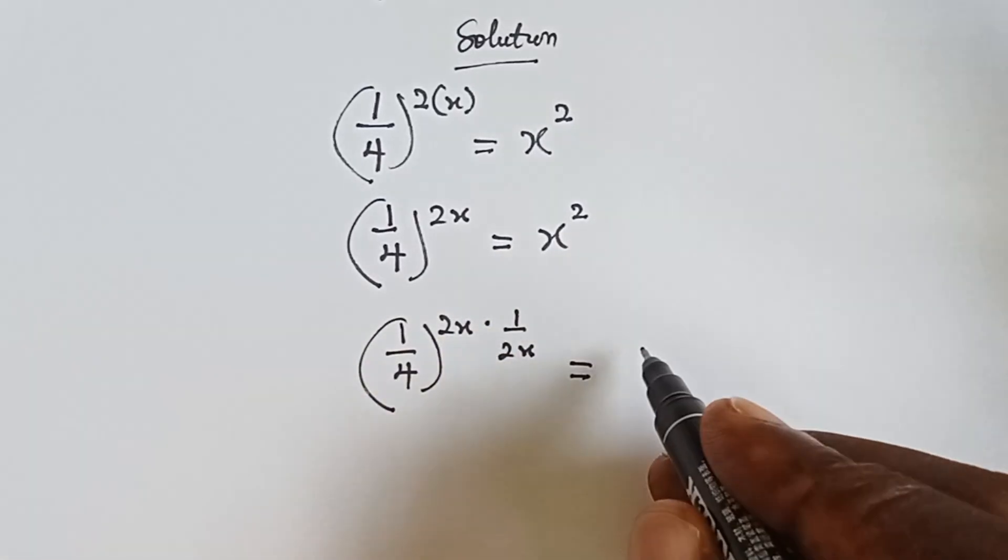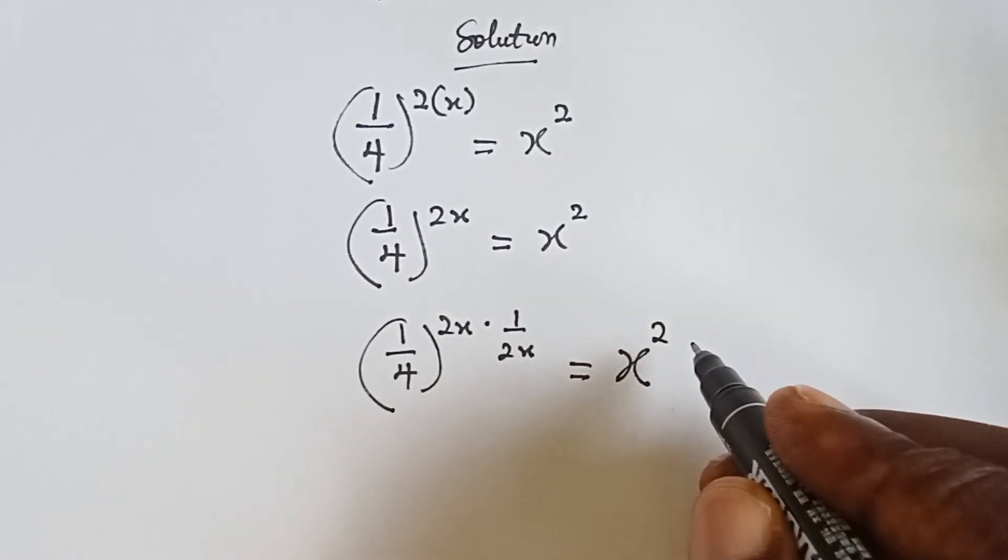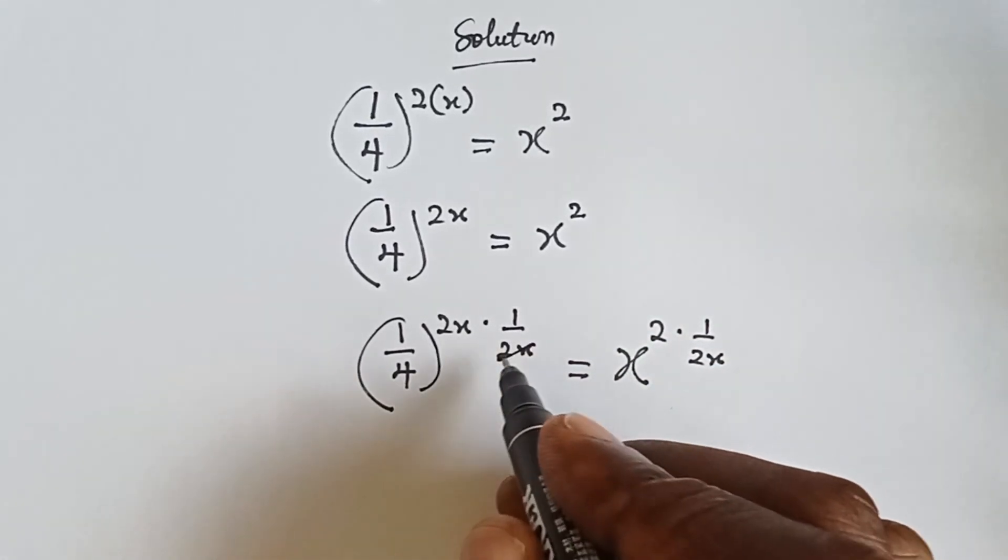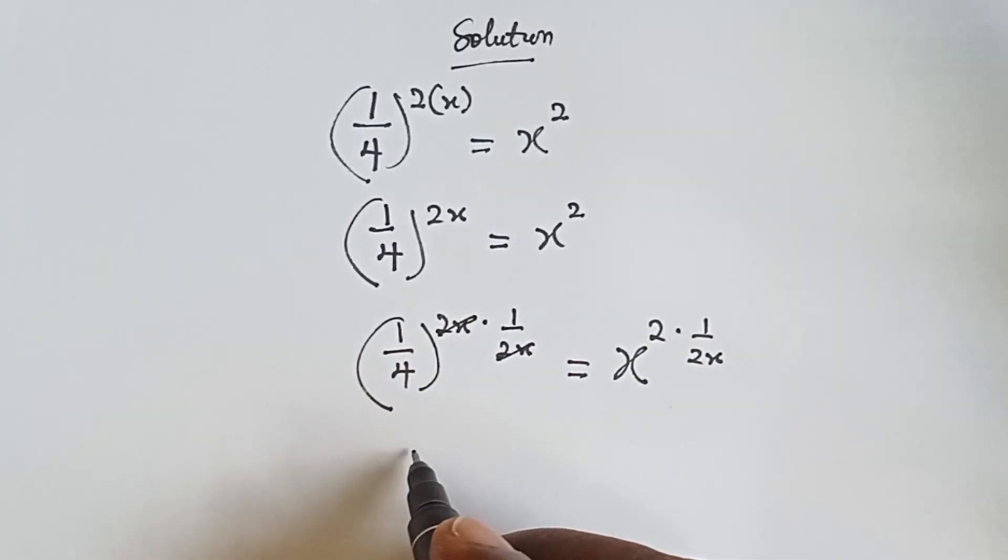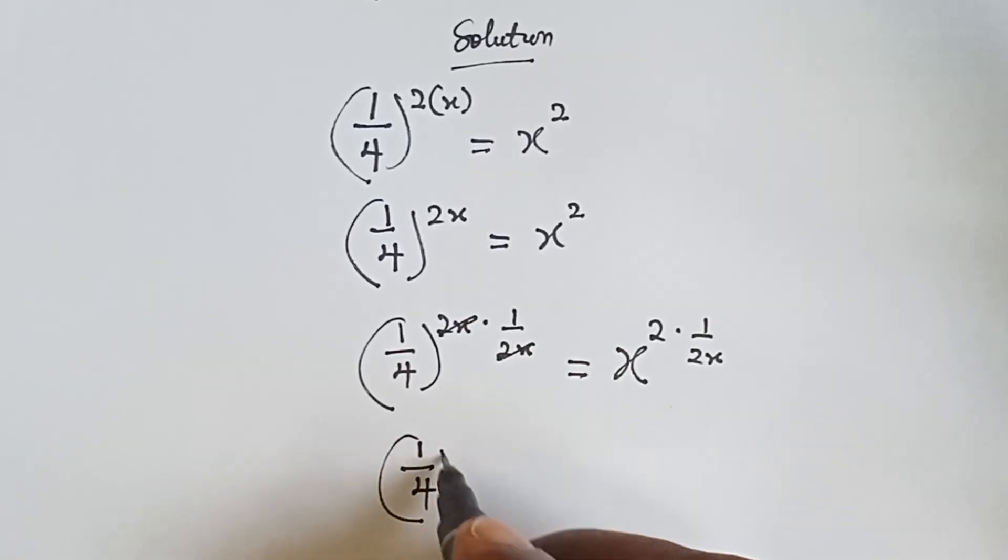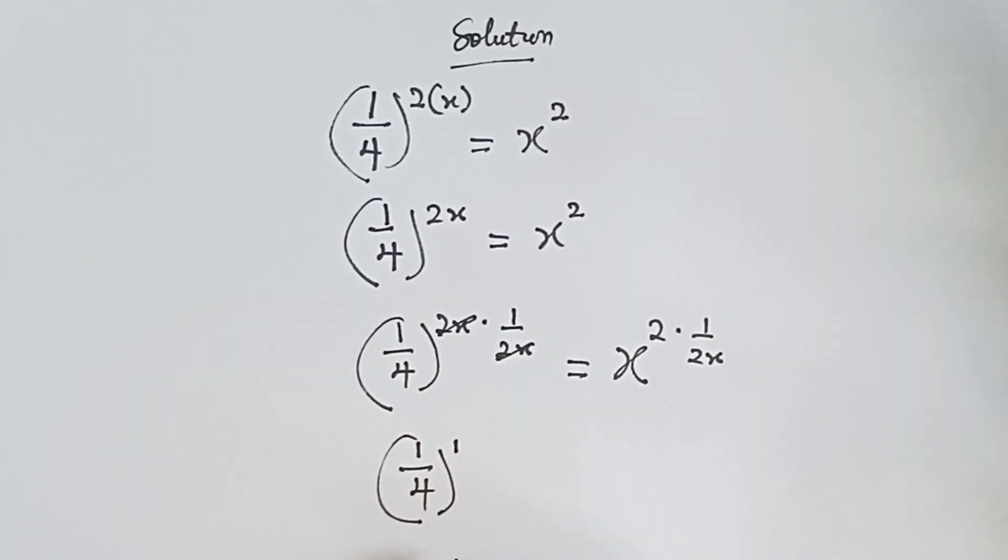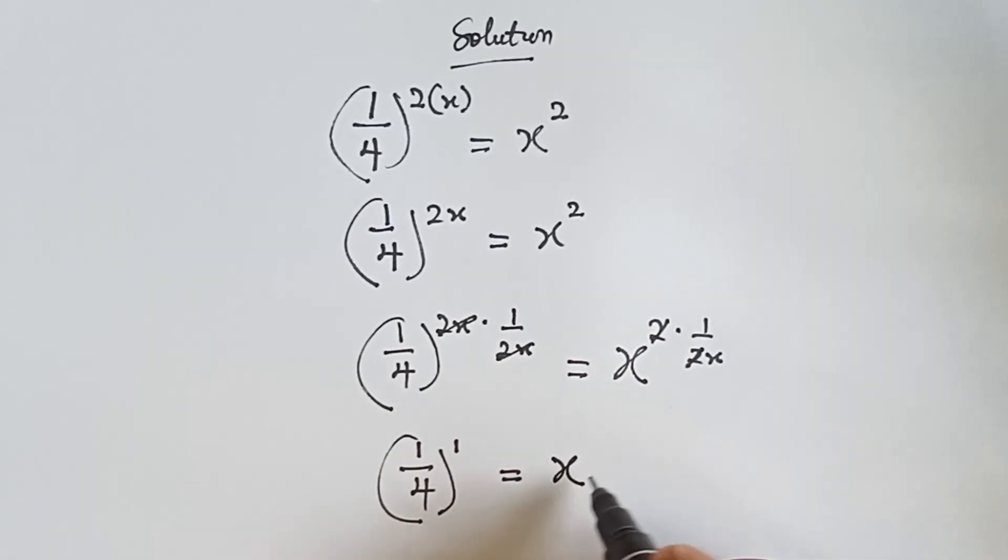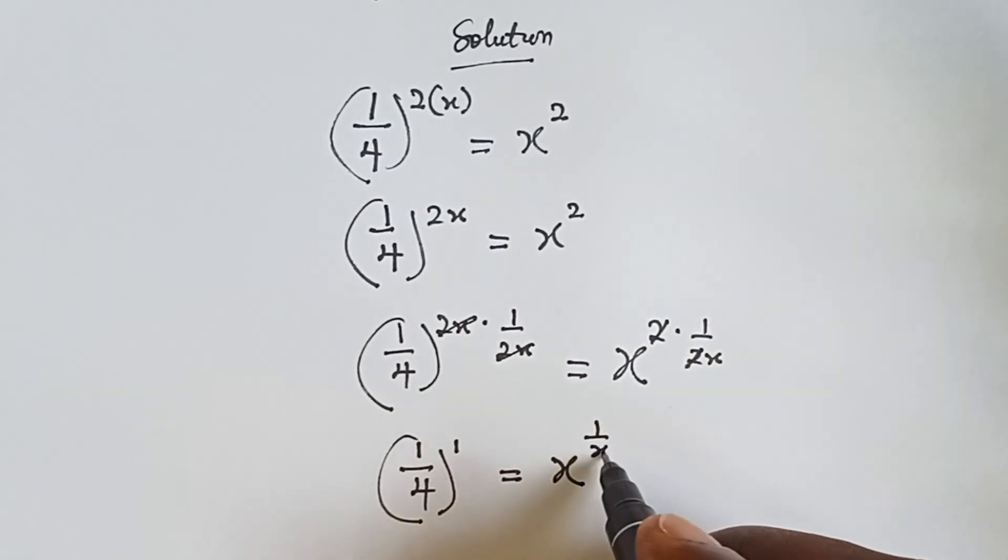And then I'm doing that to this side too. I have x squared multiplied by 1 over 2x. So this 2x we cancel, this 2x, I have 1 over 4 raised to power 1 that is left here equals to x raised to power 1 over x.